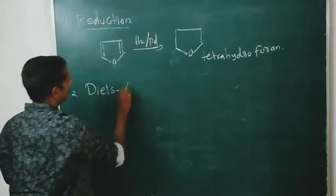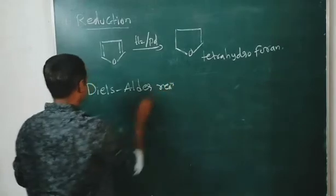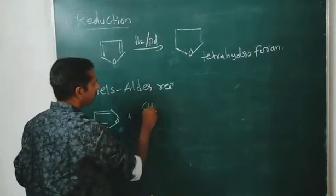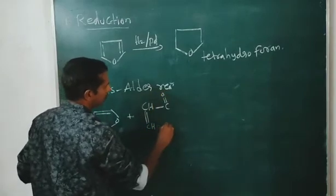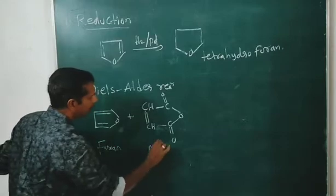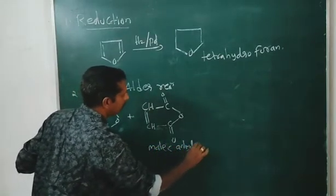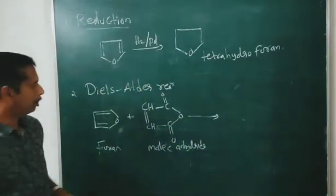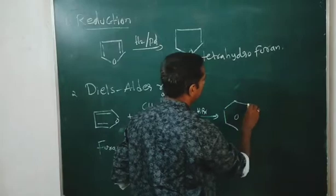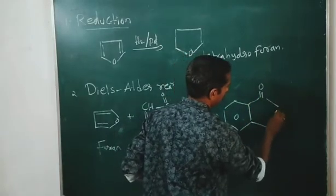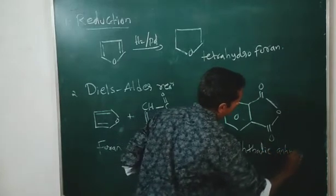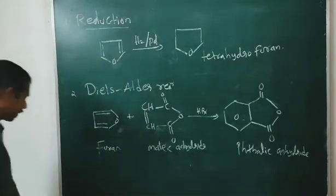Second reaction: Diels-Alder reaction. Furan reacts with maleic anhydride (CH=CH–C(=O)–O–C(=O)) in the presence of HBr to give phthalic anhydride. First reaction is reduction; second is the Diels-Alder reaction.